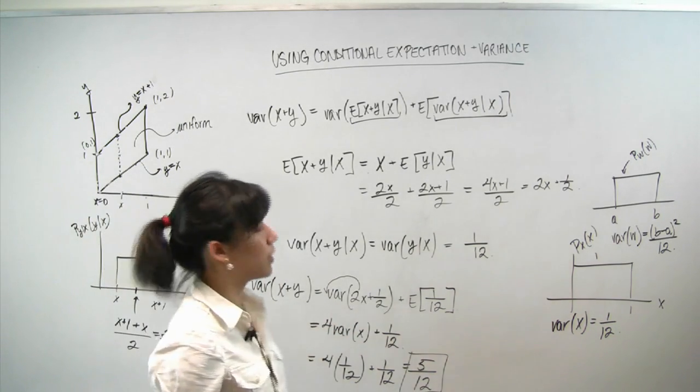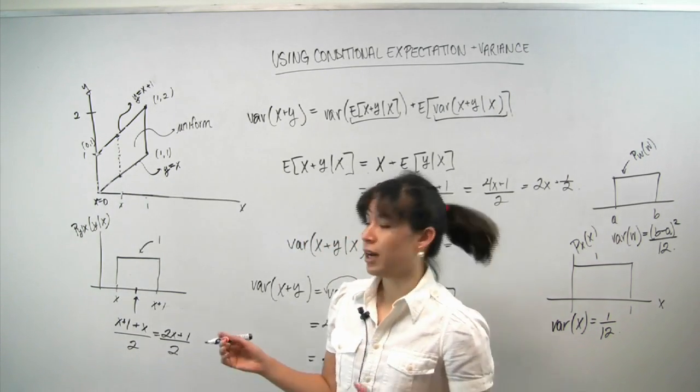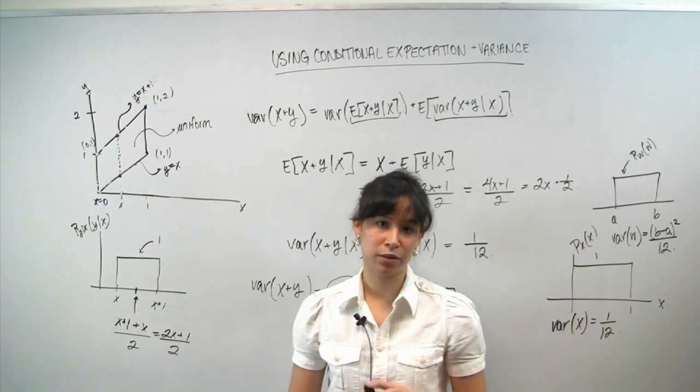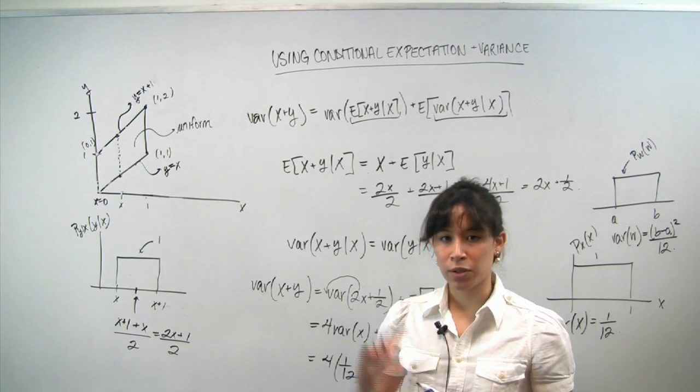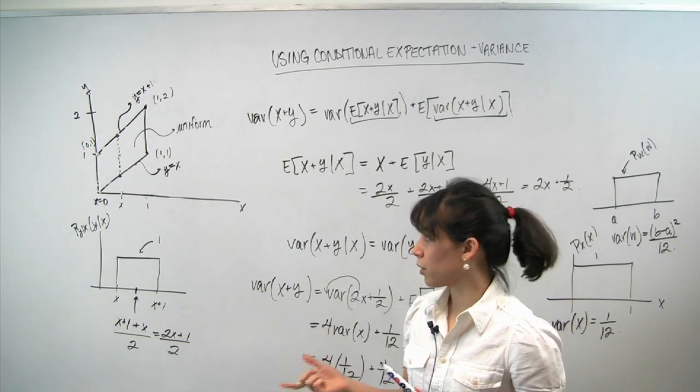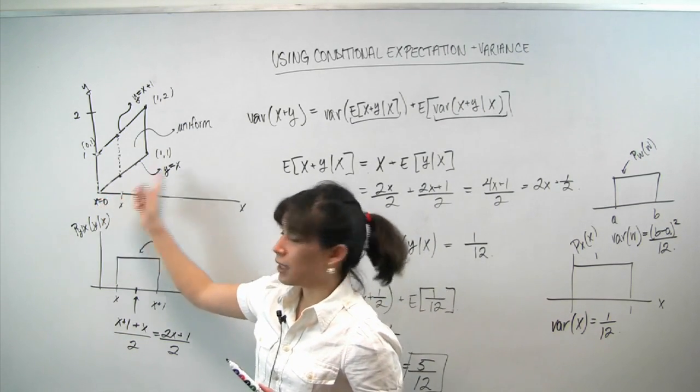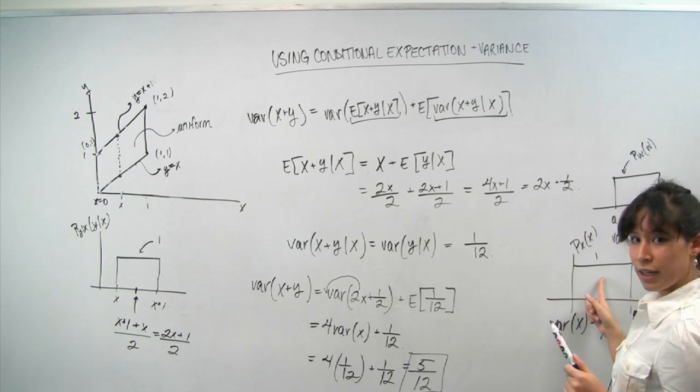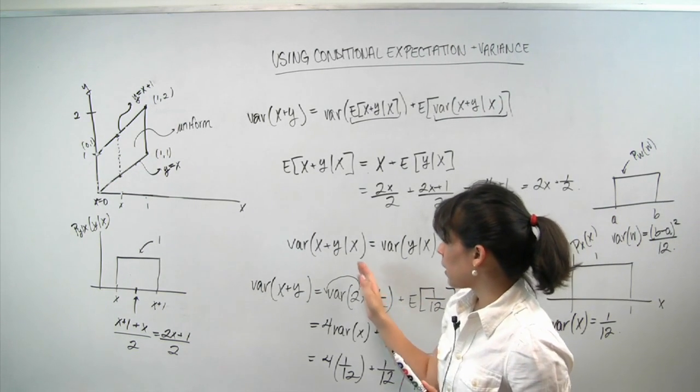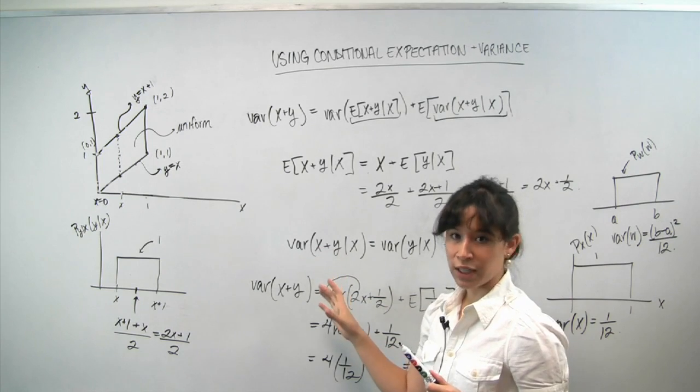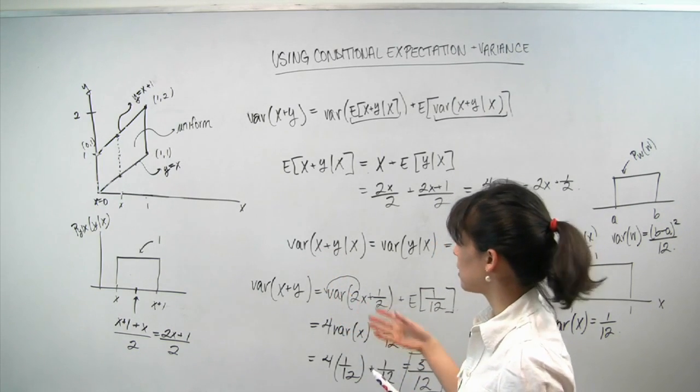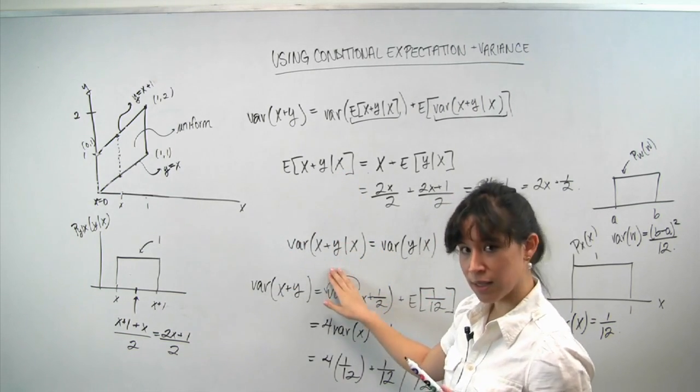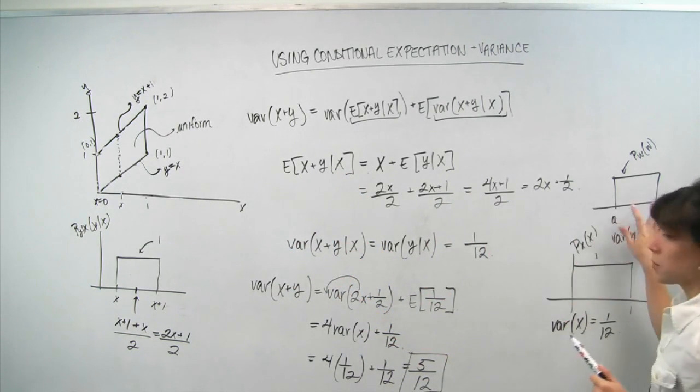So this problem was straightforward in the sense that our task was very clear. We had to compute this, and we had to do so by using the law of total variance. But we sort of reviewed a lot of concepts along the way. We saw how given a joint PDF, you marginalize to get the PDF of x. We saw how constants don't change variance. We got a lot of practice finding conditional distributions and computing conditional expectations and variances. And we also saw this trick.